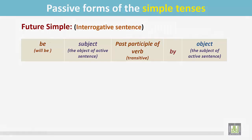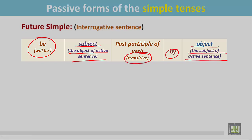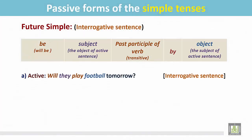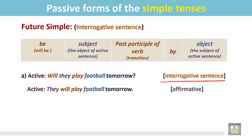Future simple interrogative sentence. See the structure: it begins with the be verb 'will', then the subject (object of active sentence), the past participle form of the transitive verb, the preposition 'by', and the object (subject of active sentence). See the examples. 'Will they play football tomorrow?' It begins with 'will' as it is an interrogative sentence, then the subject, the verb 'play', and 'football' as the object of this verb.